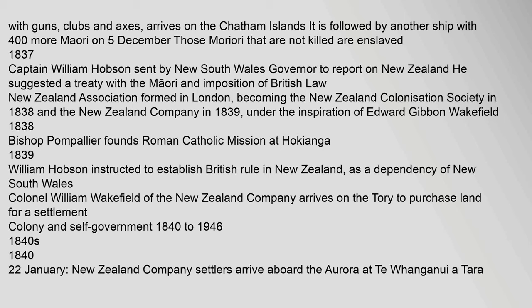The New Zealand Association became the New Zealand Colonisation Society in 1838 and the New Zealand Company in 1839, under the inspiration of Edward Gibbon Wakefield. 1838: Bishop Pompallier founds Roman Catholic mission at Hokianga. 1839: William Hobson instructed to establish British rule in New Zealand as a dependency of New South Wales. Colonel William Wakefield of the New Zealand Company arrives on the Tory to purchase land for a settlement colony.